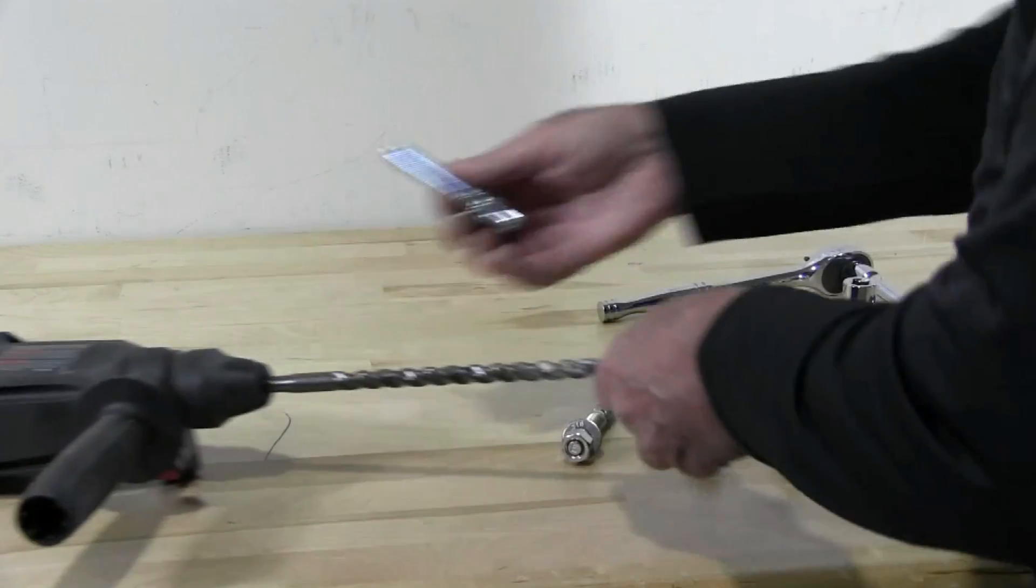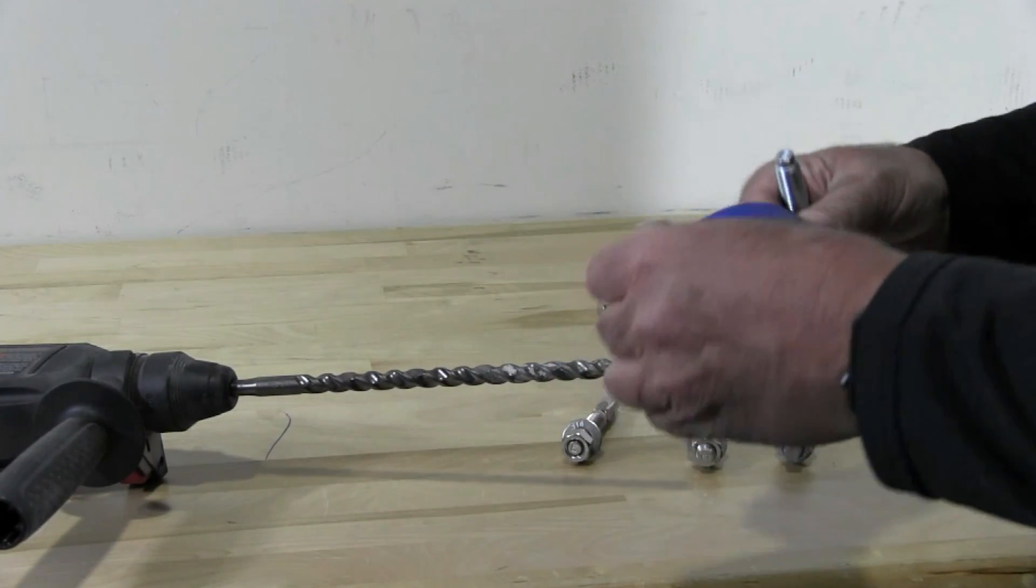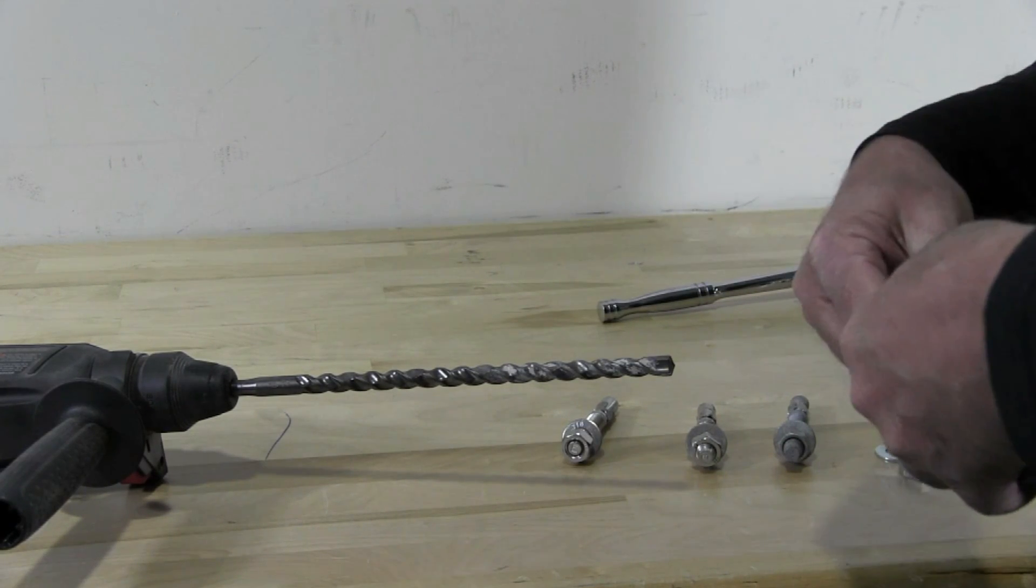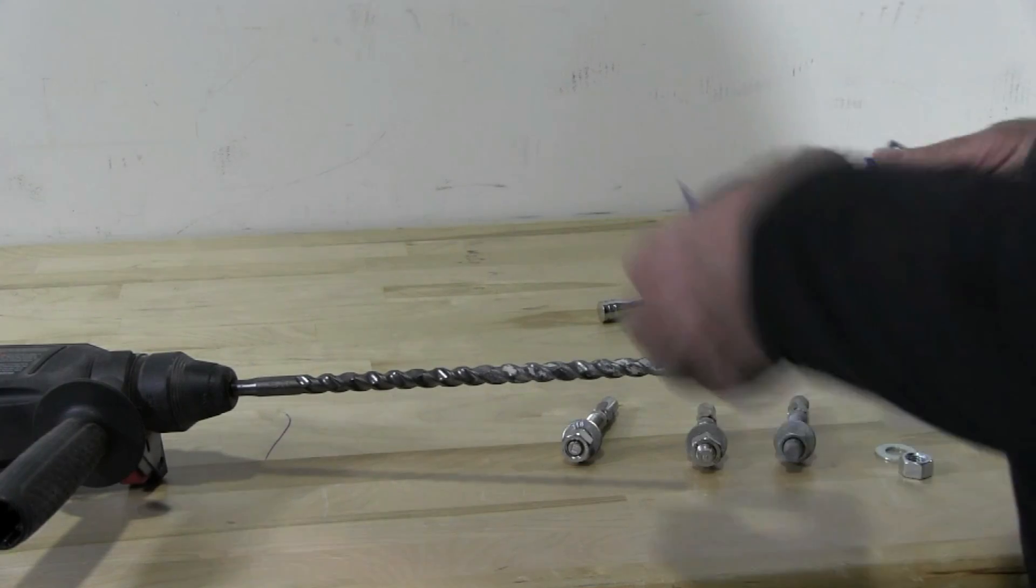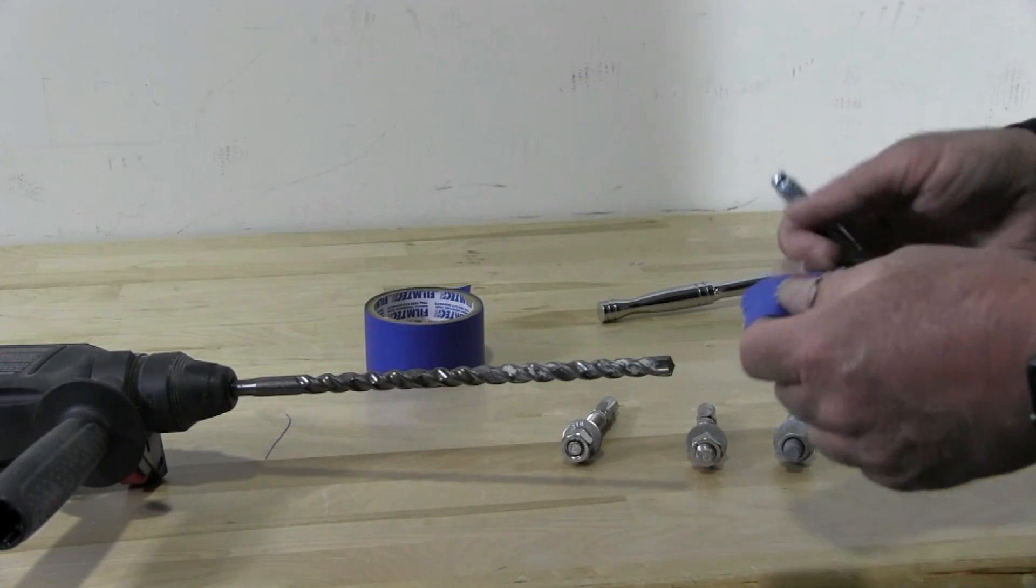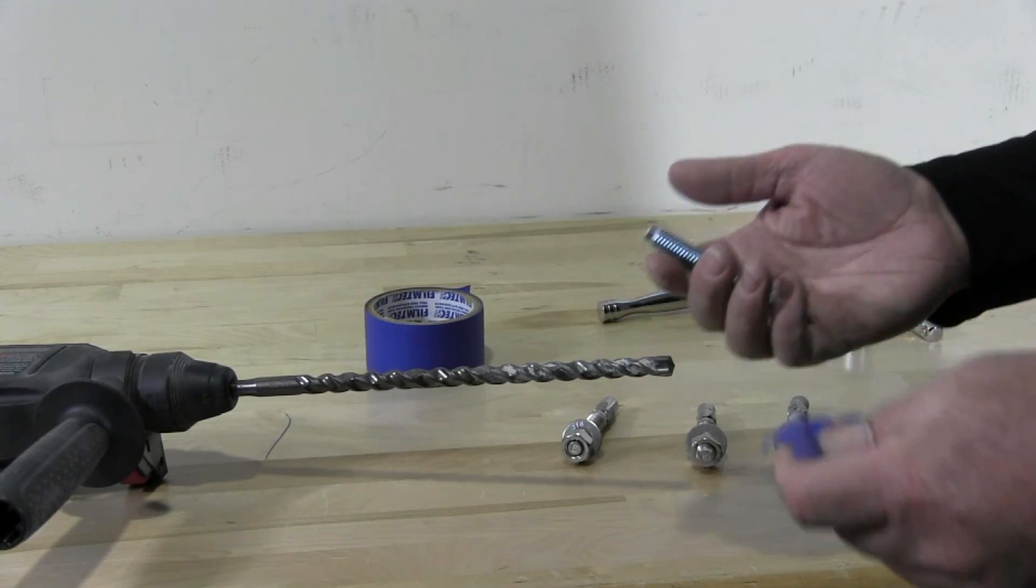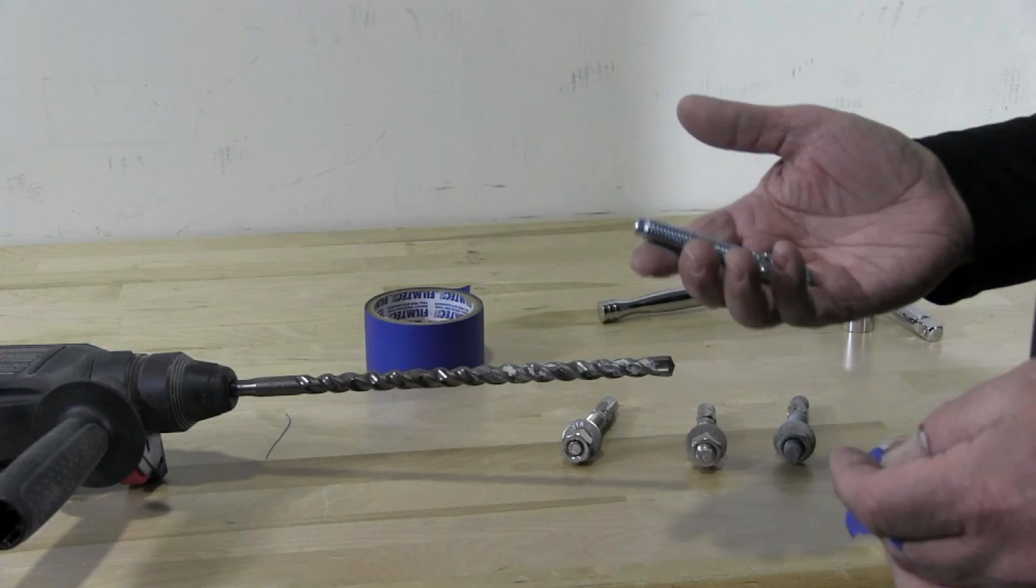We're going to use this blue tape as a marker to prevent from drilling through the concrete. I'm drilling into 8 inches of concrete here. This is a two and three quarter inch wedge anchor, so I have no worries about drilling through the concrete.